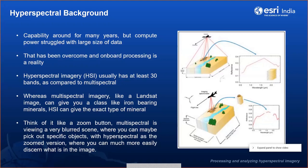The capability of hyperspectral imaging has been around for many years, but we struggled to process these large datasets. Now we have overcome those challenges and can process them quickly with available infrastructure. Hyperspectral imagery contains a large number of bands — at least 30 — compared to multispectral.